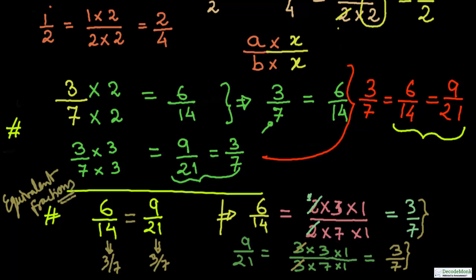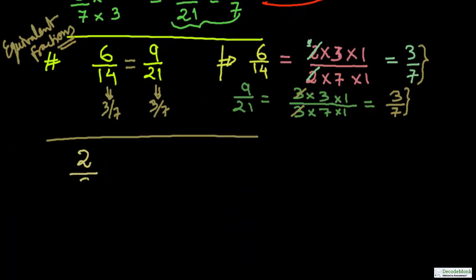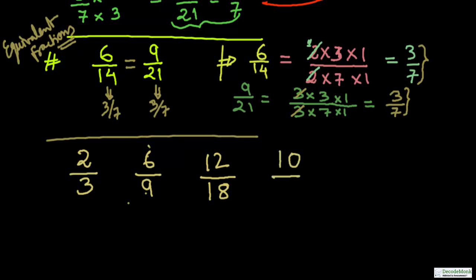We need to practice more to get a feel for equivalent fractions. Let's take one more example: 2 upon 3, 6 upon 9, 12 upon 18. I multiplied the numerator by 3 to get 6 upon 9 (since 2 threes are 6 and 3 threes are 9), and by 6 to get 12 upon 18, and by 5 to get 10 upon 15. All these fractions are equivalent fractions, which can be verified by factorizing numerator and denominator.